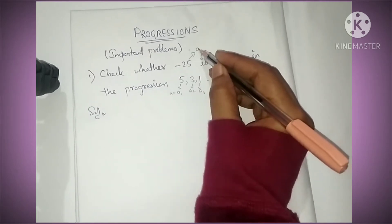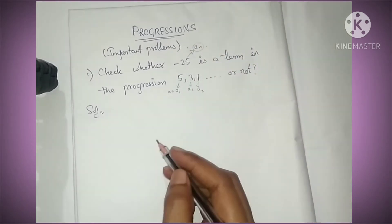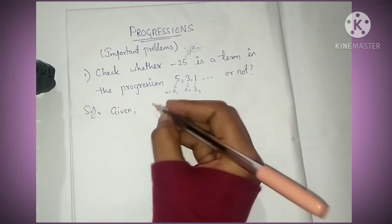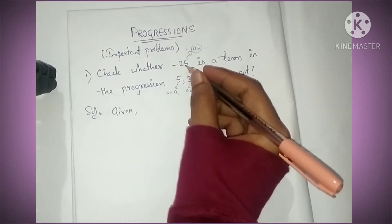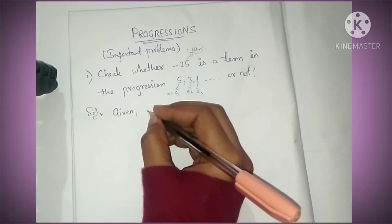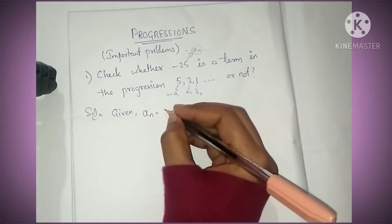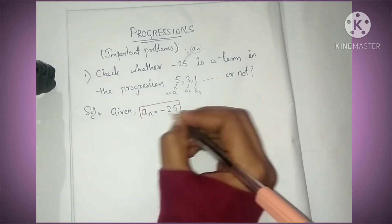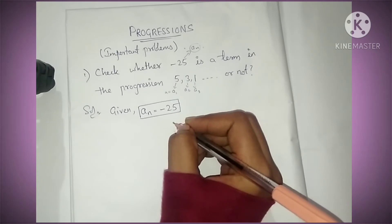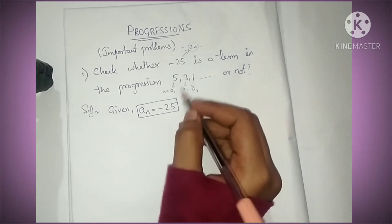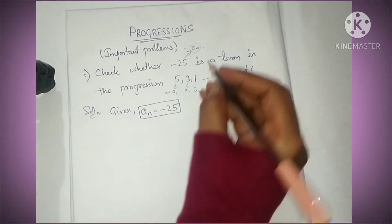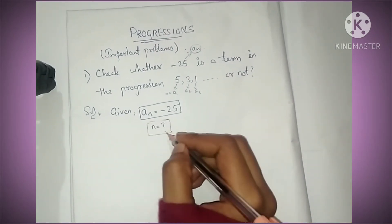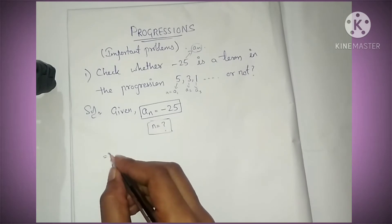So we can take an. First we will write given: a and nth term we are taking, an = -25. Here we have to find n, which term it is. How we can find? Here we can use the formula.